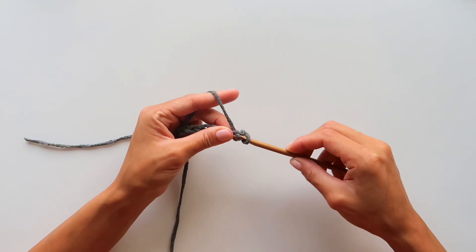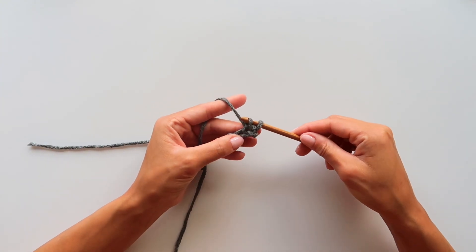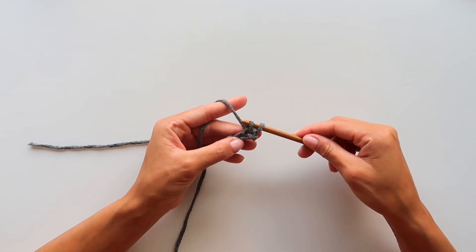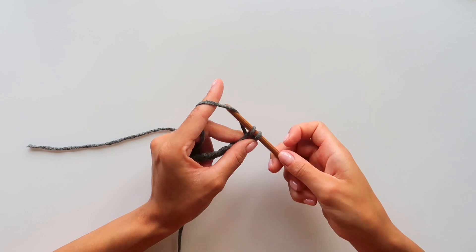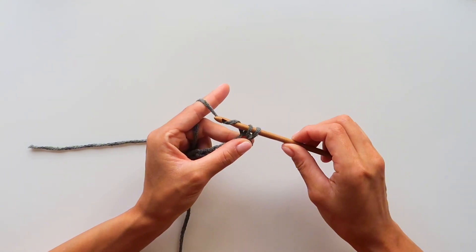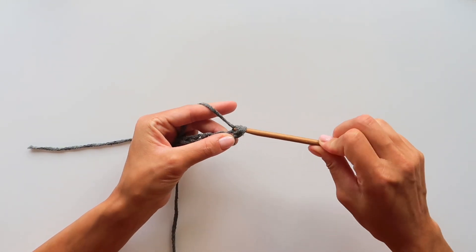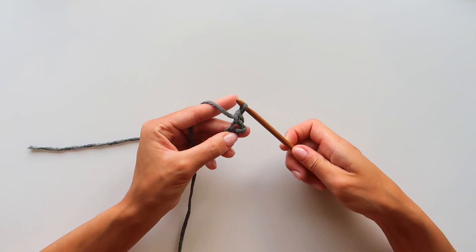And now when we have two loops on your hook, let's go grab some yarn again and pull through. So this is the first single crochet and I will show you one more time.